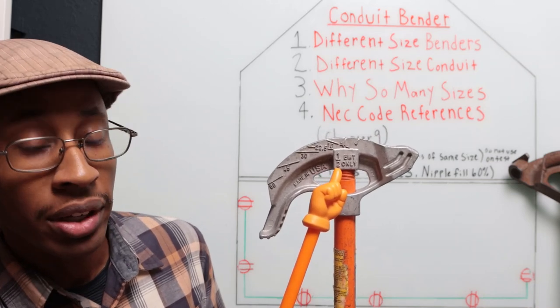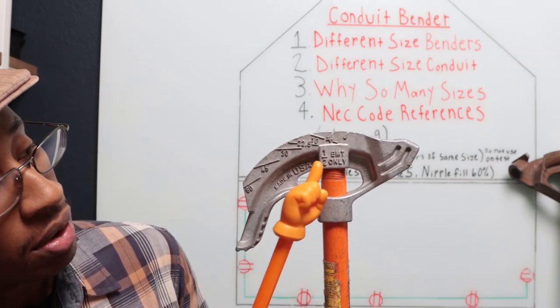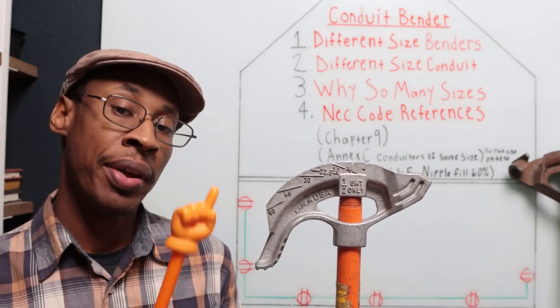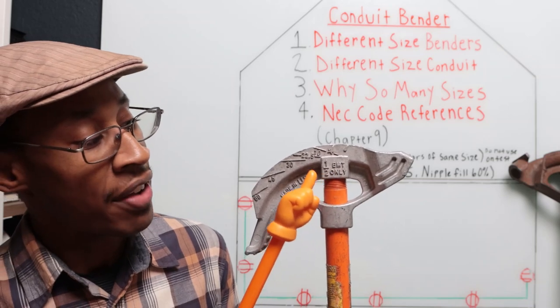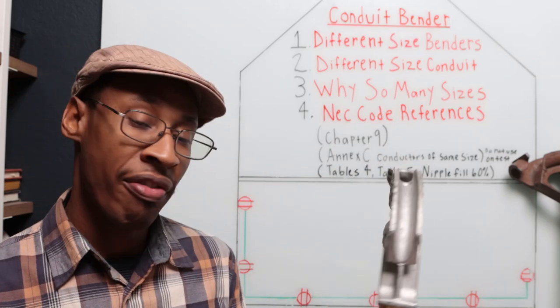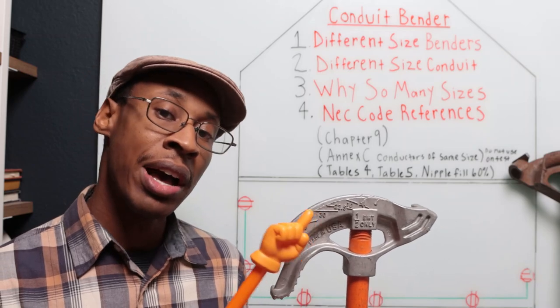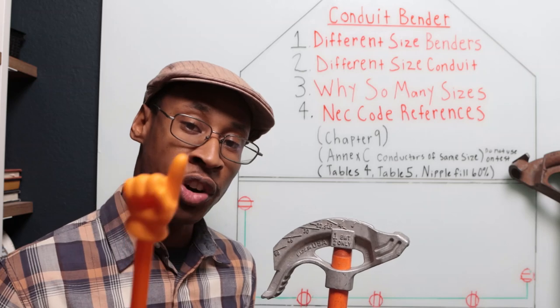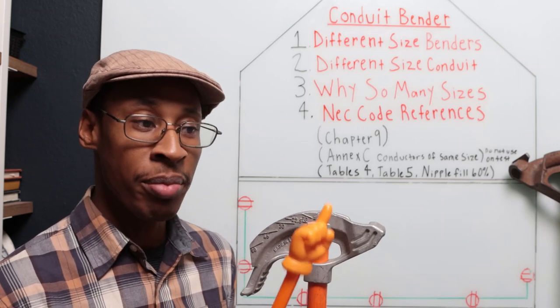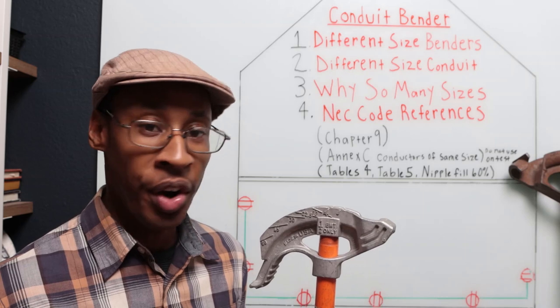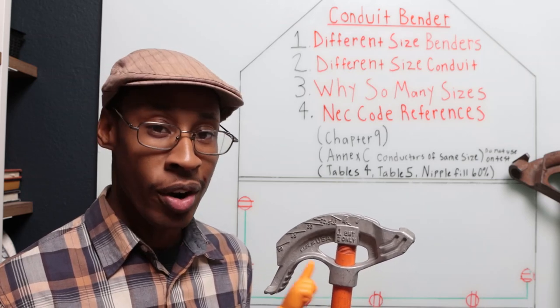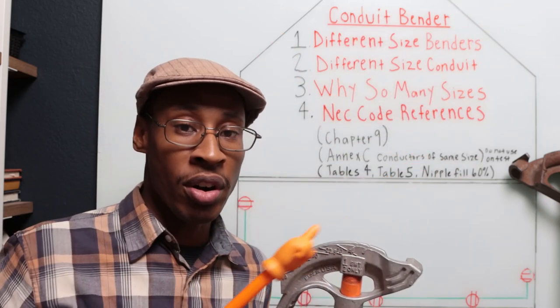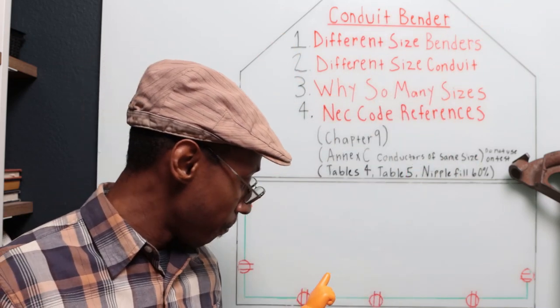Half inch EMT only. This bender is going to be the smallest pipe bender that they make. And this is for a half inch EMT conduit. You will not find a smaller EMT conduit bender than this. So if someone tries to play a trick on you, which we used to do to apprentices, we'd say go get me that quarter inch bender. Well, they don't make quarter inch pipe, nor do they make a quarter inch bender. So this is going to be the first size and it goes up from there in small increments.